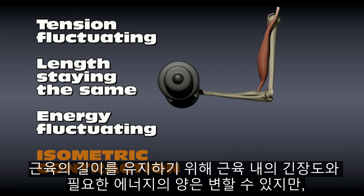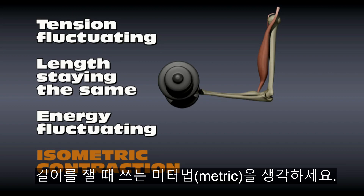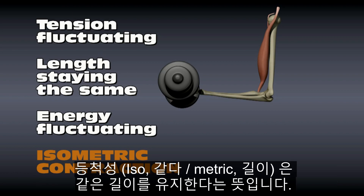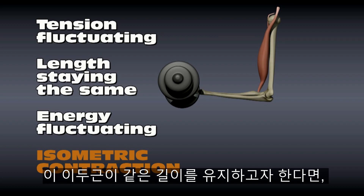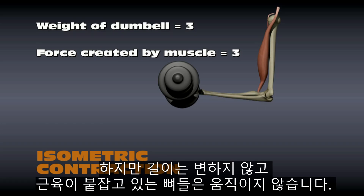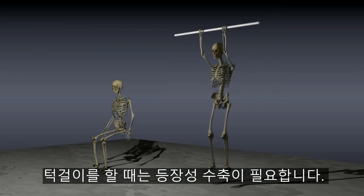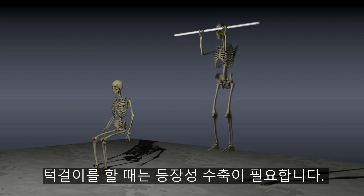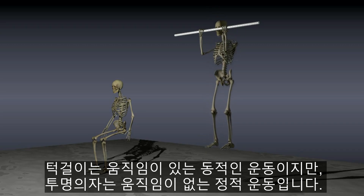In isometric contractions, the muscle length stays the same. The tension across the muscle may change and the energy required by the muscle may change in order to maintain the length, but the length stays the same. Think of the metric system being used to measure a length — isometric maintains an equal length. If this biceps muscle wants to maintain a constant length, it may require more tension and more energy depending on how much weight is added, but the bones don't move. Doing pull-ups requires isotonic contractions; the invisible chair requires isometric contractions.